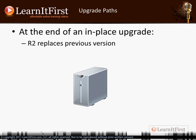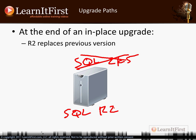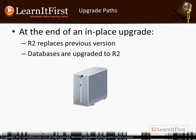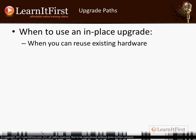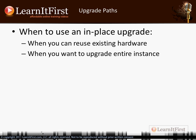At the end of your in-place upgrade, R2 replaces what was the previous version. For example, if we used to have SQL 2005, after running the upgrade we no longer have that — now we have R2 installed. The instance name doesn't change, and your clients don't have to change their connection strings at all. The databases are upgraded: your master, your model, your user databases are all upgraded to R2. One instance is still there. You would use this when you want to reuse your existing hardware and replace the entire instance. In-place upgrade equals replacement.